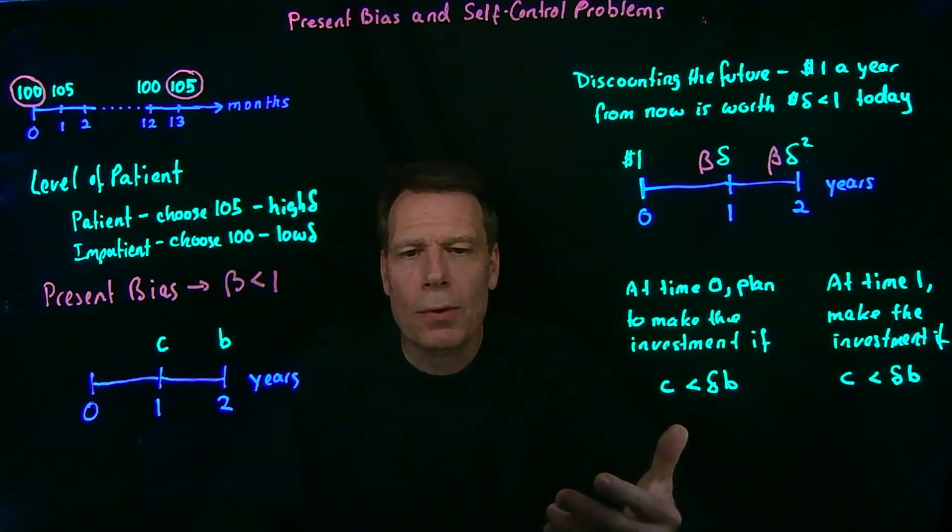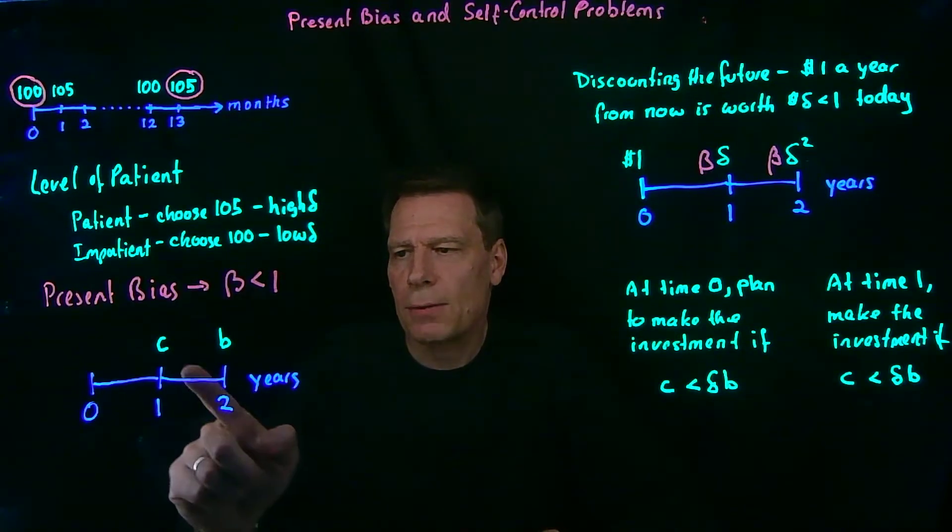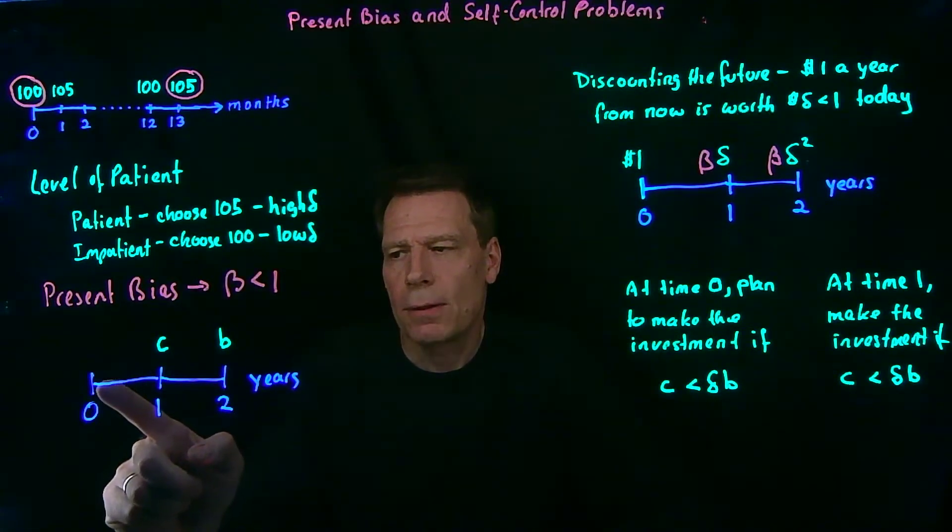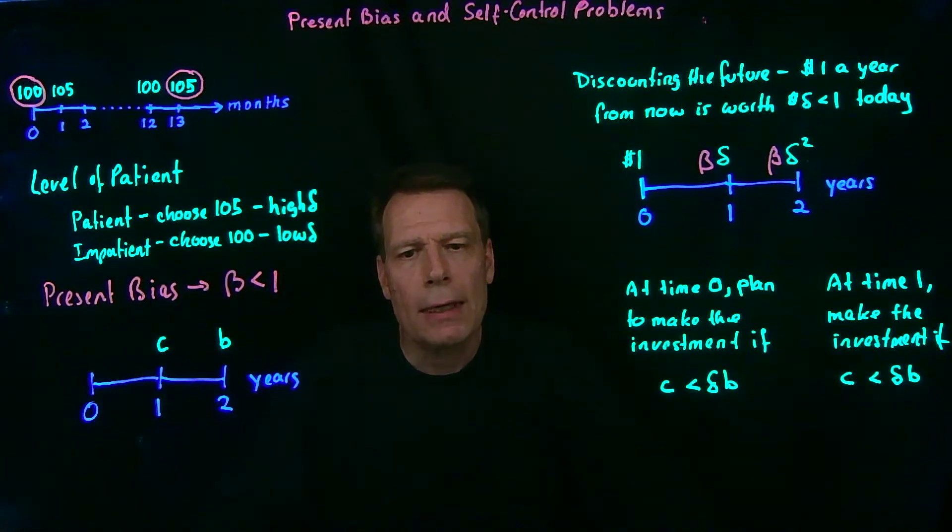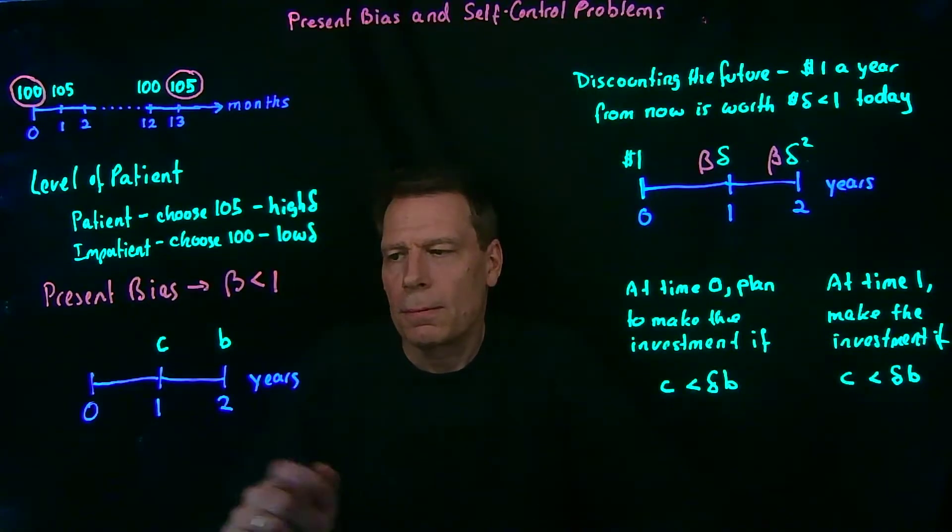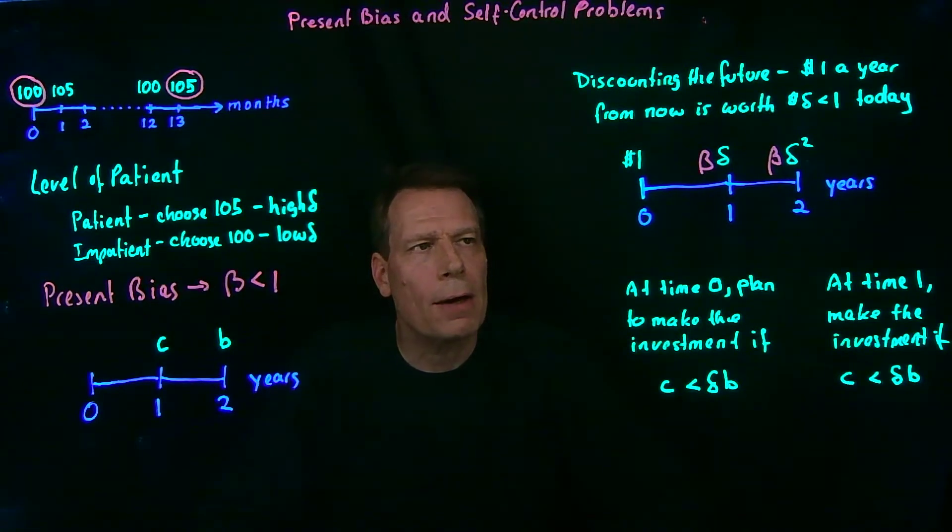So how does that work in terms of the decisions people make? Well, let's think back to the example where you're asked in the present whether you're willing to make an investment that has a certain cost a year from now, in order to get a benefit two years from now. When we think about that, we have to discount the future. We're sitting in the present, so the cost is happening a year from now.